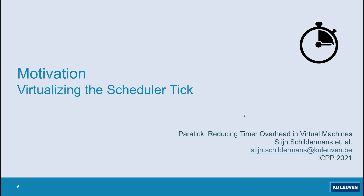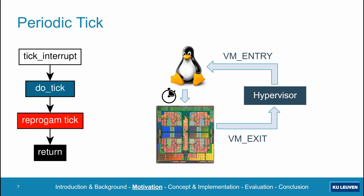As I said in the beginning of this presentation, this work is about optimizing timers in virtual machines. Let's take a look at how this timer mechanism behaves when we virtualize it, starting with classic periodic ticks. The problem here is that every time a tick interrupt arrives, the timer hardware has to be reprogrammed. In a virtual machine this is a problem, because guest kernels cannot be allowed to directly manipulate the hardware, as this may interfere with other virtual machines on the system.